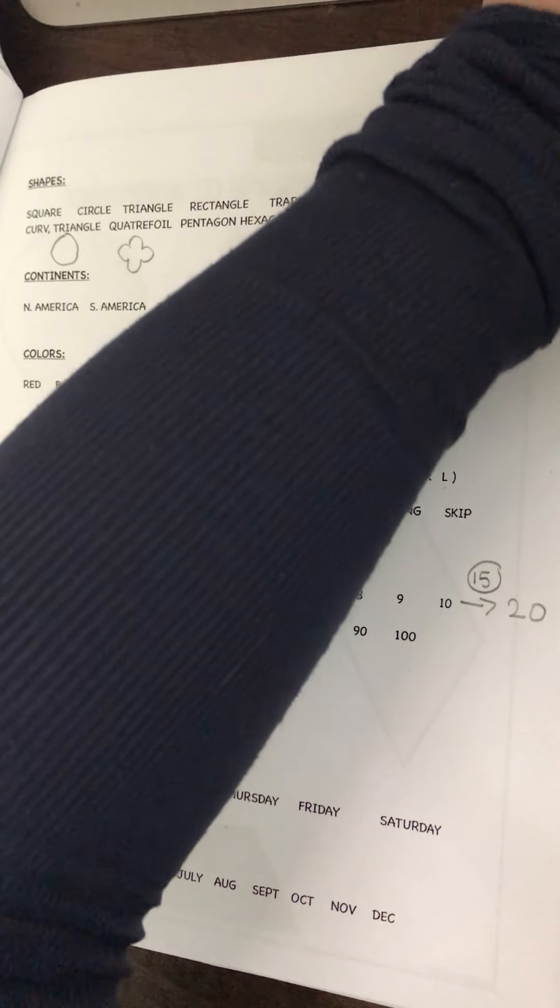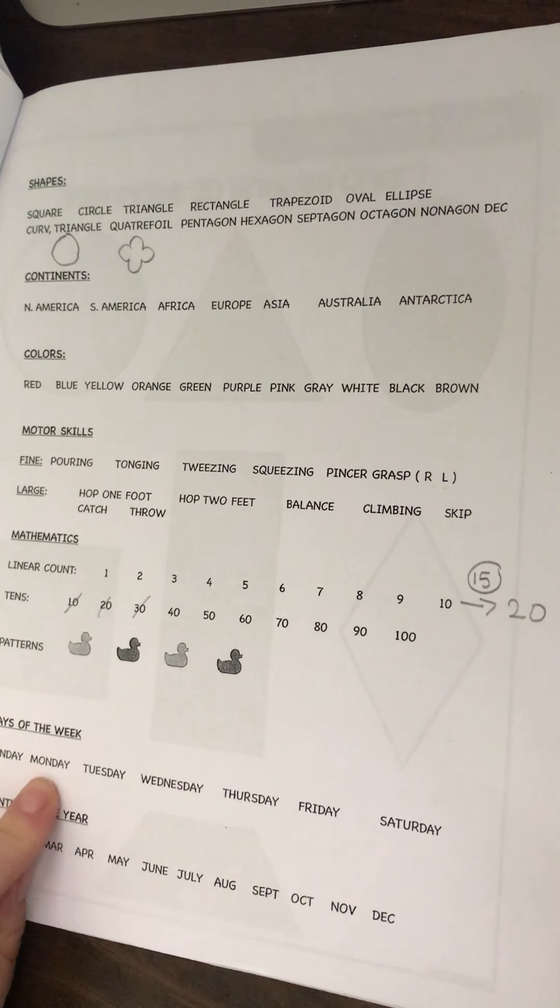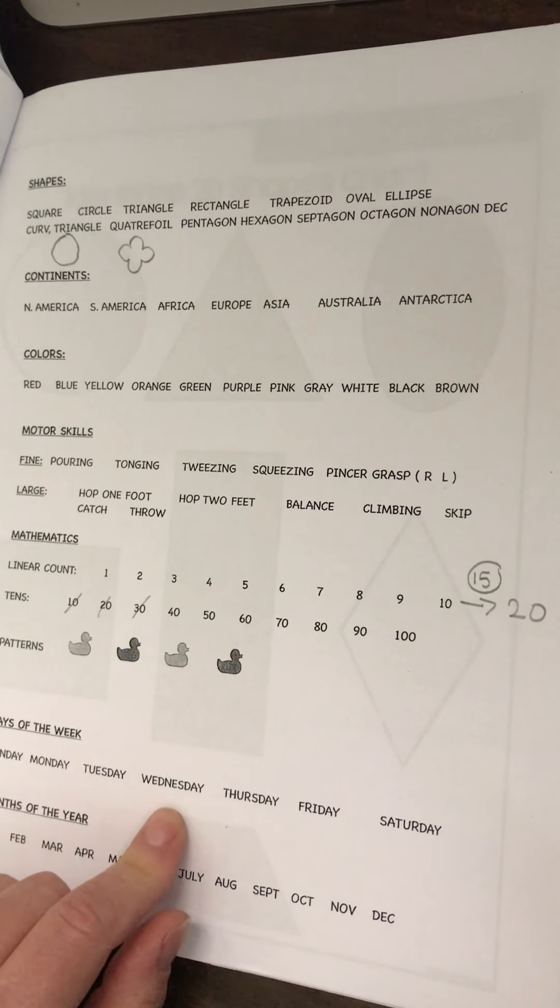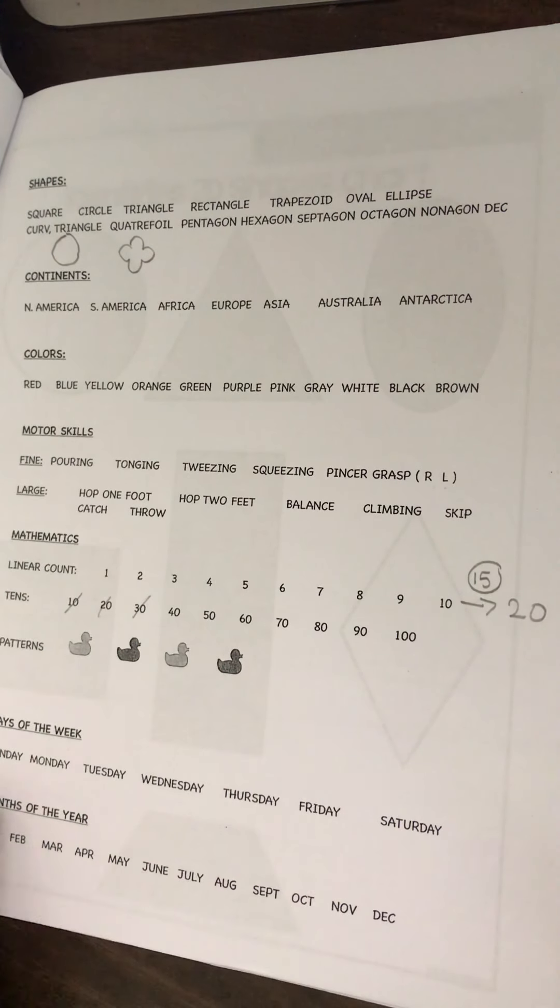Days of the week and months of the year - just see if they can remember the song or you can help sing it with them. Sunday, Monday, Tuesday, Wednesday, Thursday, Friday, Saturday. Or remember there's the Monsters one: 'There's Sunday and there's Monday, there's Tuesday and there's Wednesday.'